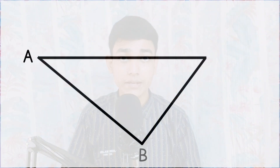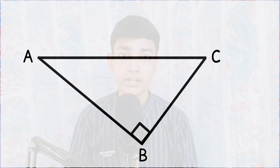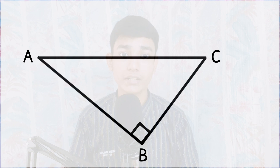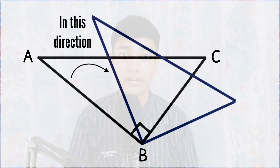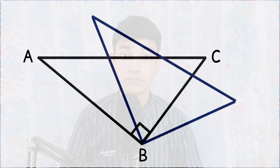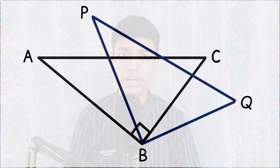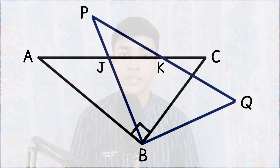Today we have an interesting geometrical problem. We take a triangle ABC in which angle B is 90 degrees. Keeping the fixed point as B, we rotate this triangle in a particular direction. We label the corners of the new triangle as P and Q, and the two intersection points as J and K.